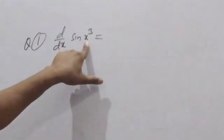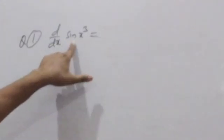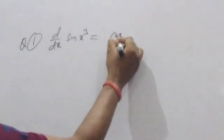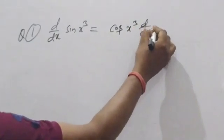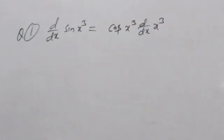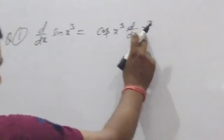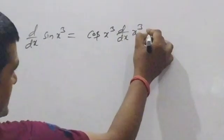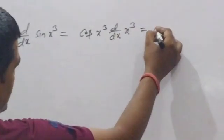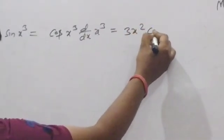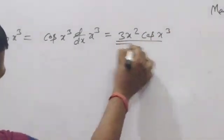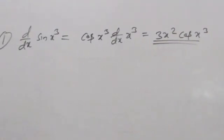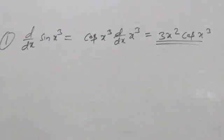Sine is the outer function and x³ is the inner function. d/dx of sin(x³) means: differentiate sine to get cos(x³), then multiply by d/dx of x³. So the answer is 3x² times cos(x³). This is the answer.